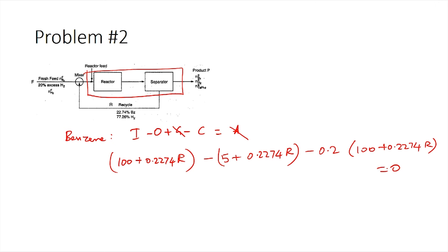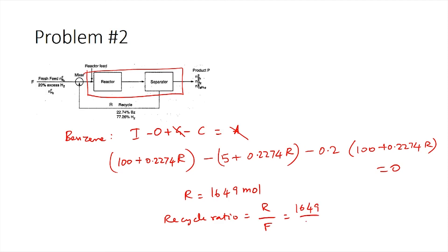Solving the equation gives R = 1649 moles. With the recycle stream known and the fresh feed being 460 moles, the recycle ratio = R / F = 1649 / 460 ≈ 3.58. With this, we have calculated both the product stream composition and the recycle ratio for this problem.